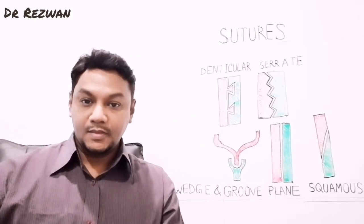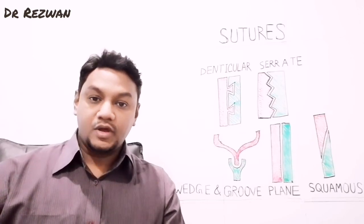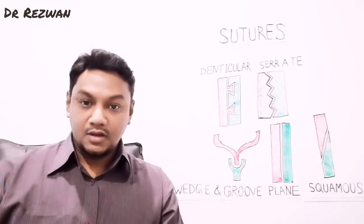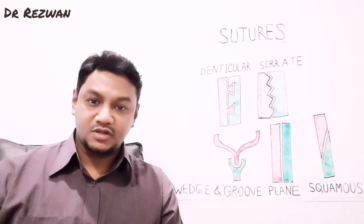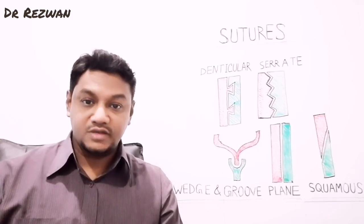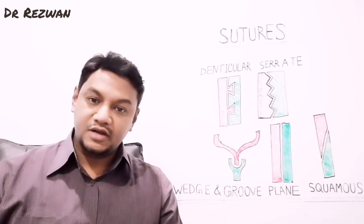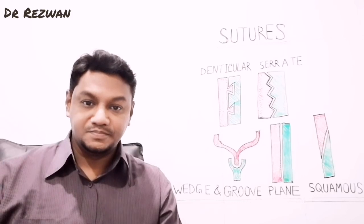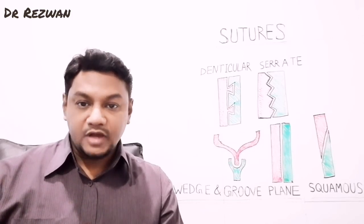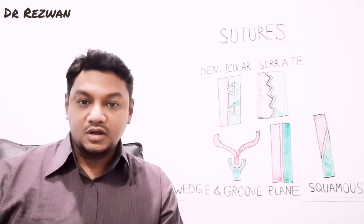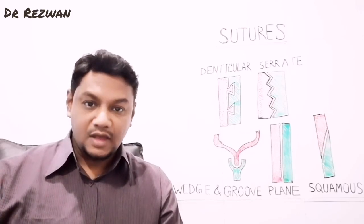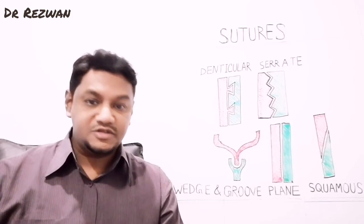Hello, Assalamu Alaikum. Today I will discuss a particular type of joint called the sutural joint or suture. You already know that there is a type of joint called the fibrous joint. Under this fibrous joint there are different types, and one variety of fibrous joint is the sutural joint. This kind of joint is commonly found on the skull. We will look at how sutural joints are formed and what their peculiarities are.